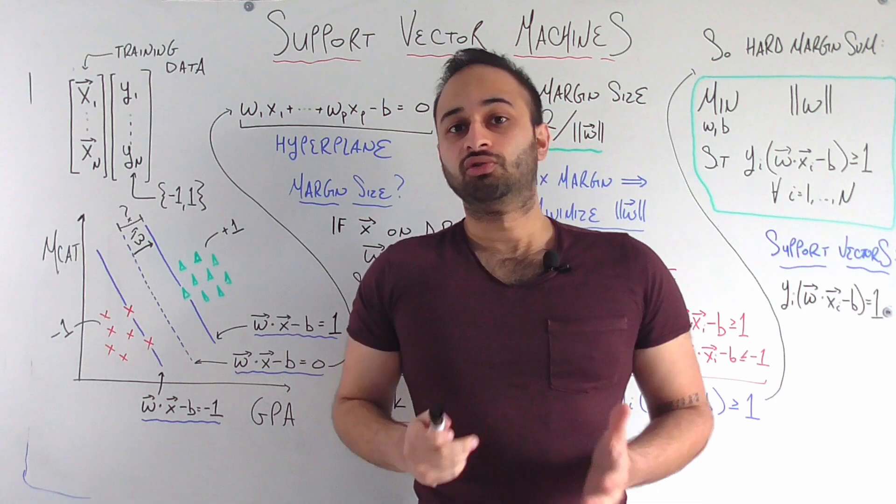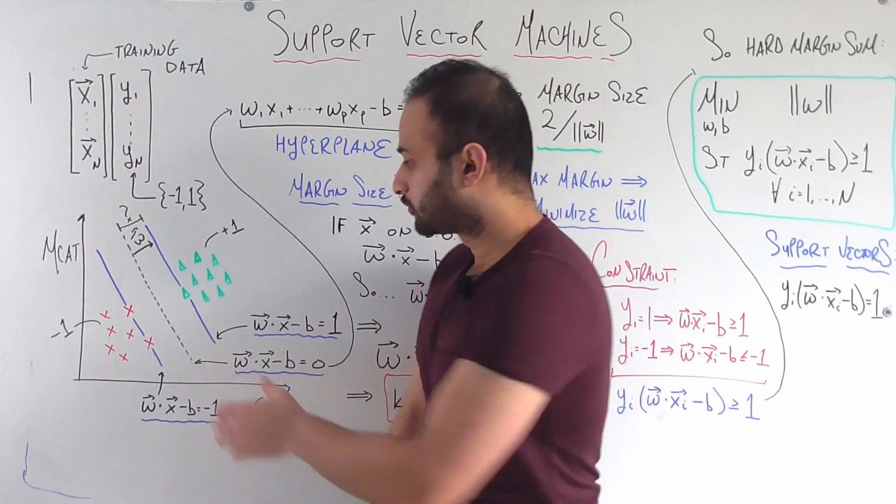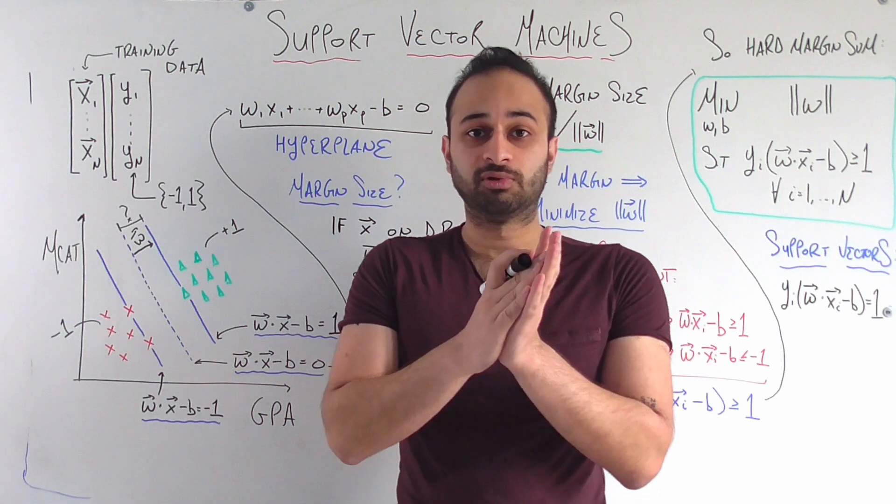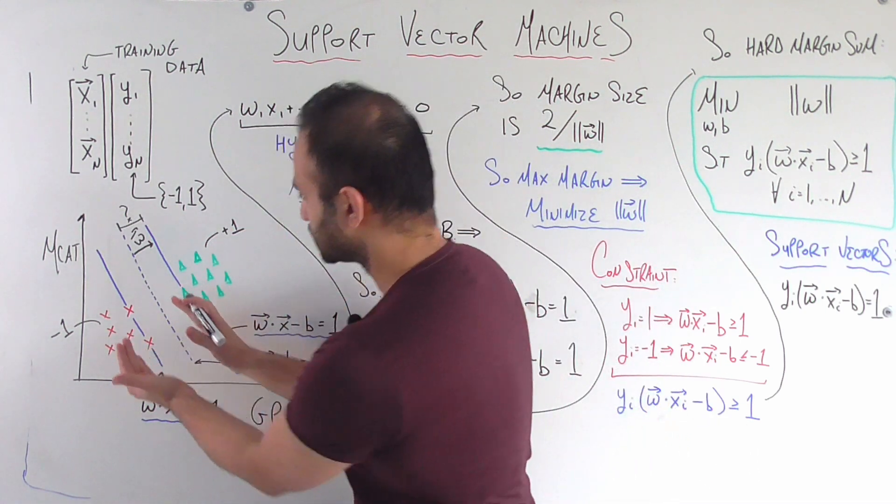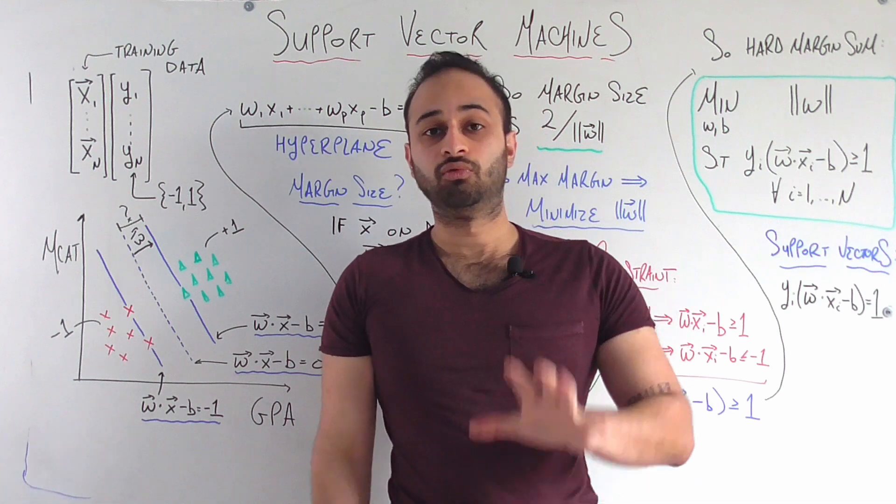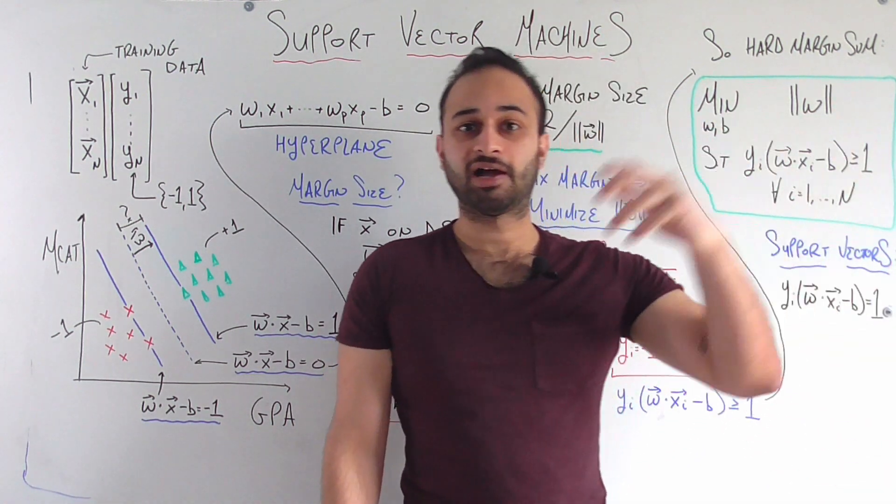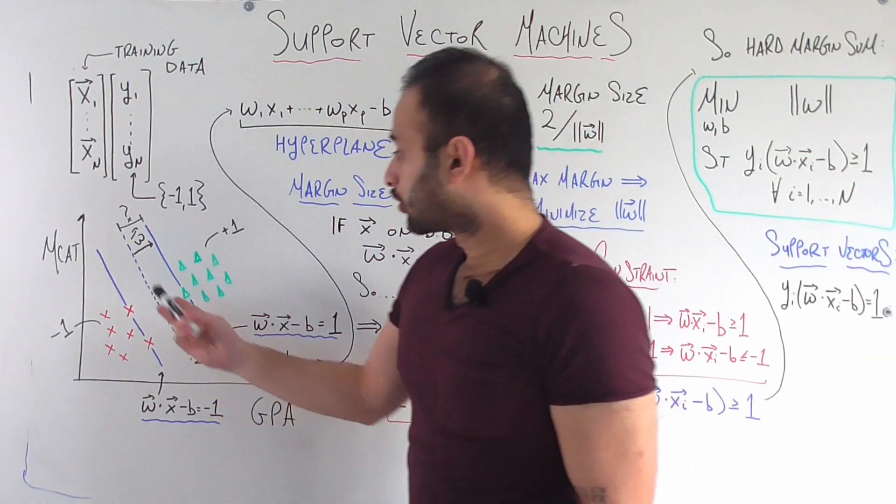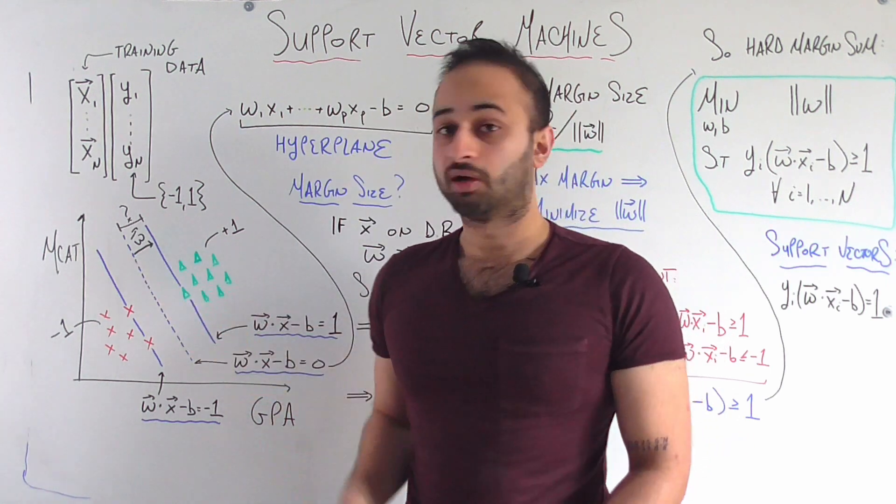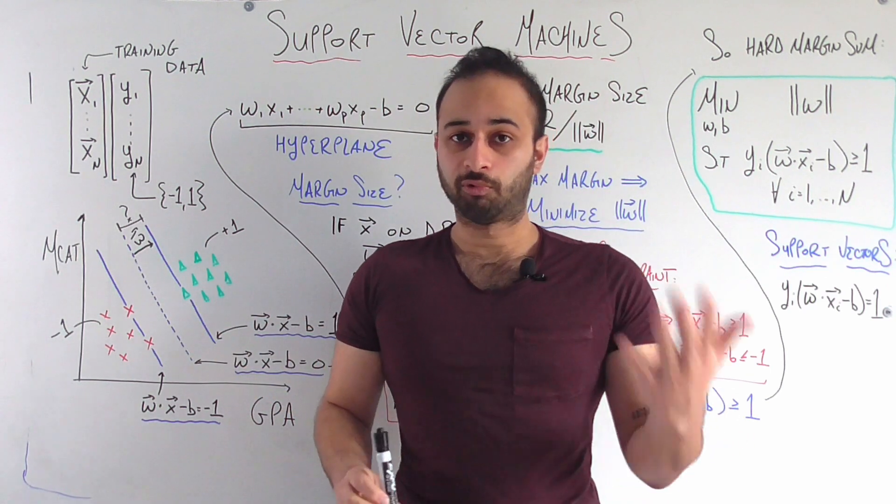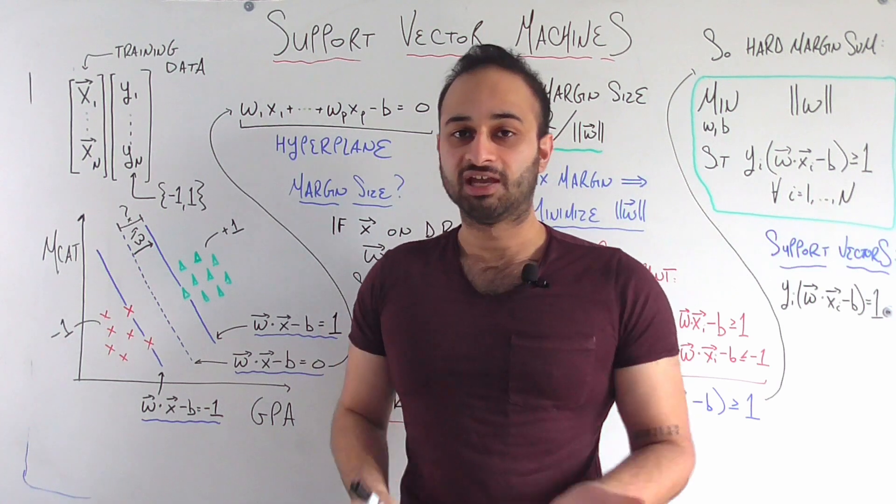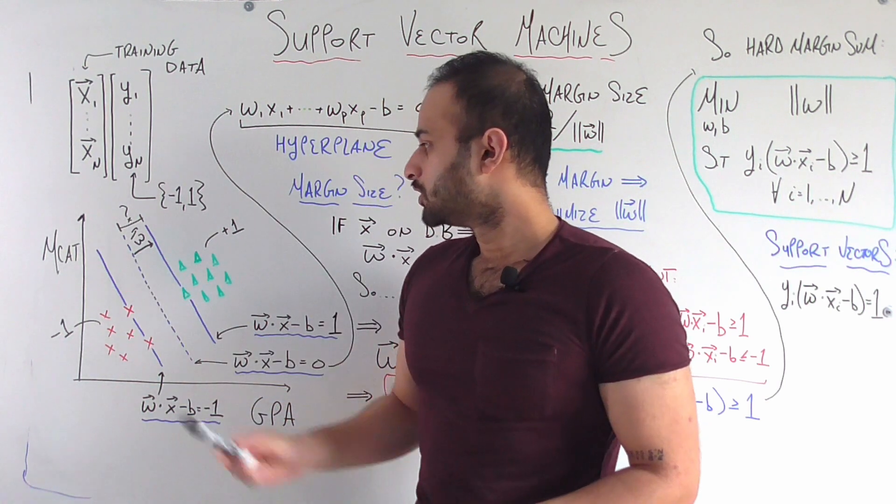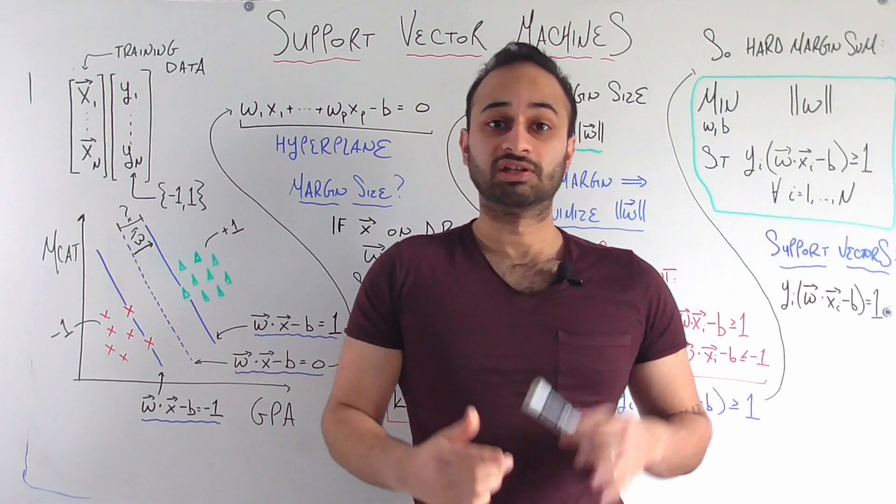Now all we need to do now is figure out what is an equation for the size of this margin, the margin being the space between the two solid blue lines. The first thing to know if you go back to your vector algebra class, the normal vector is going to be w. And by normal what we mean is perpendicular to the hyperplane, in this case perpendicular to the line. So this vector here is w itself.